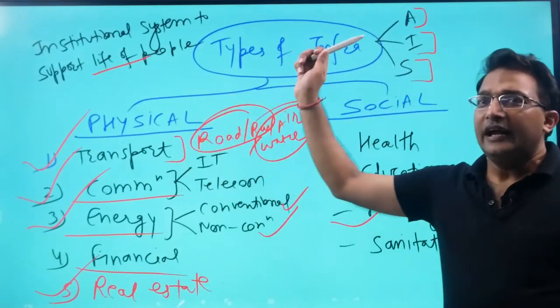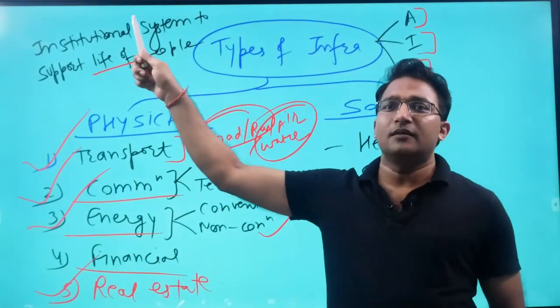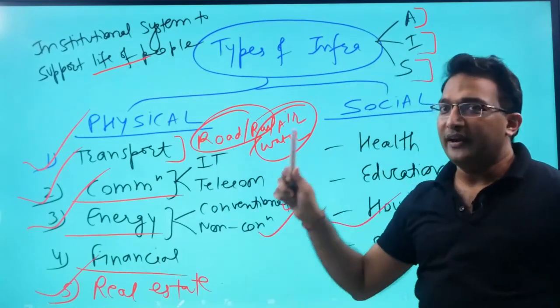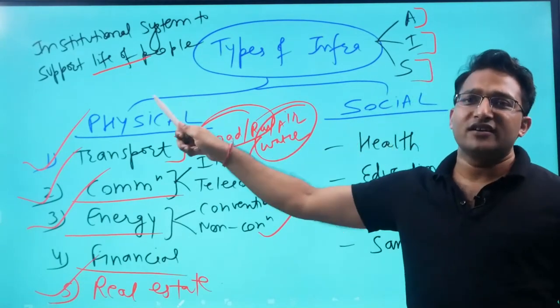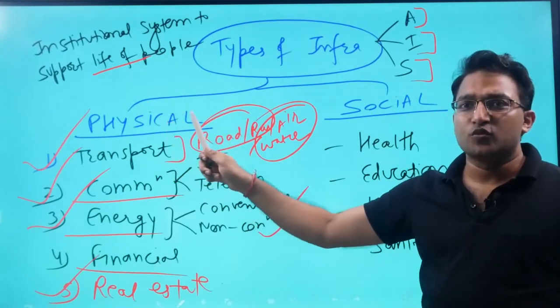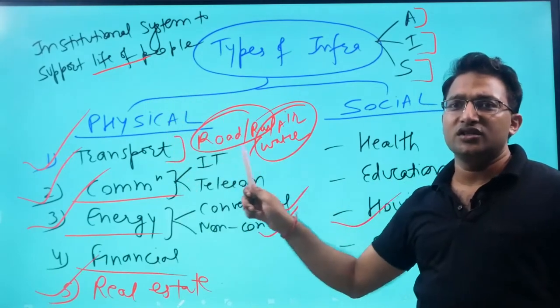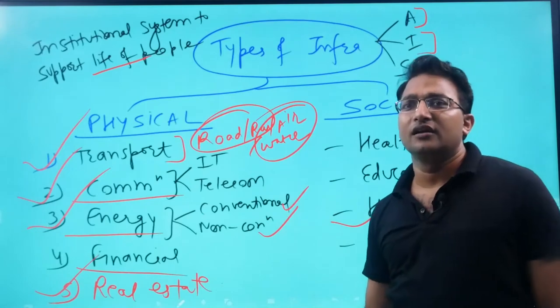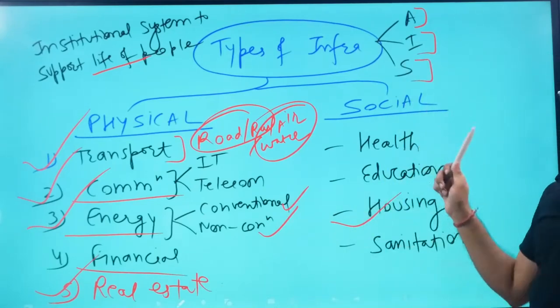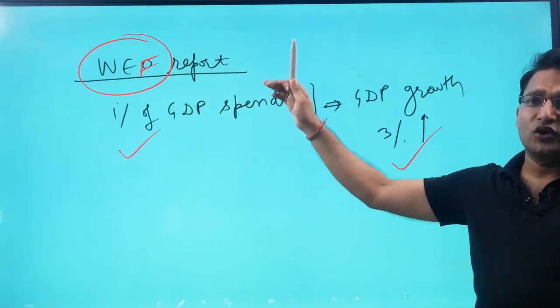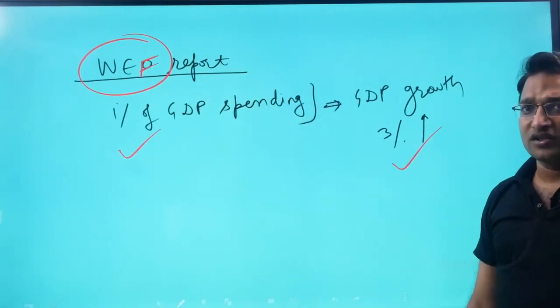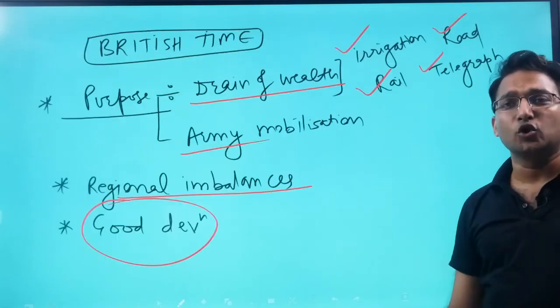Infrastructure is the institutional system to support the life of people. It can be divided into physical and social infrastructure. Physical infrastructure includes transport, communication, energy, financial, and real estate. Social includes health, education, housing, and sanitation. As per the World Economic Forum report, one percent of investment into infrastructure increases GDP growth by three percent.